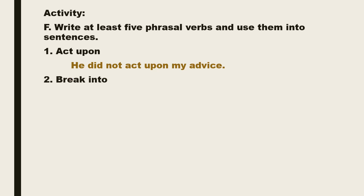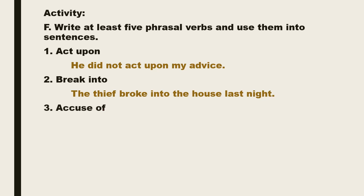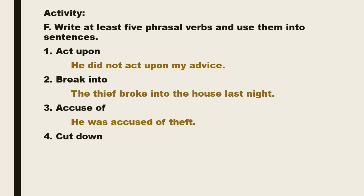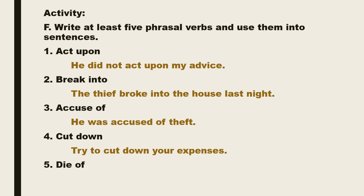The second phrasal verb is break into, which means to begin suddenly to do something. The sentence: 'The thief broke into the house last night.' The third is accused of — a person or group charged with or on trial for a crime. The sentence: 'He was accused of theft.' The fourth is cut down, which means to reduce the size, amount, or quantity of something. The sentence: 'Try to cut down your expenses.' The fifth is die of, which means to die because of something. The sentence: 'He died of cancer.'